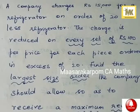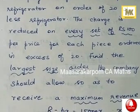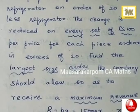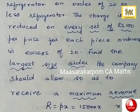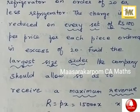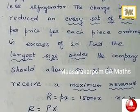Something for revenue, you have to discuss, you know, R is equal to px, price into number of units x. So R is equal to px is equal to 15,000x when x is less than or equal to 20.